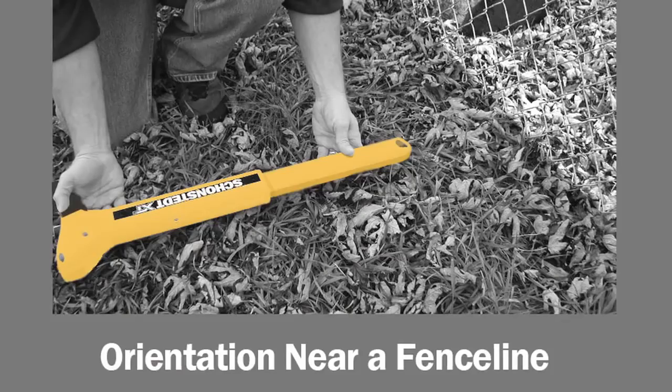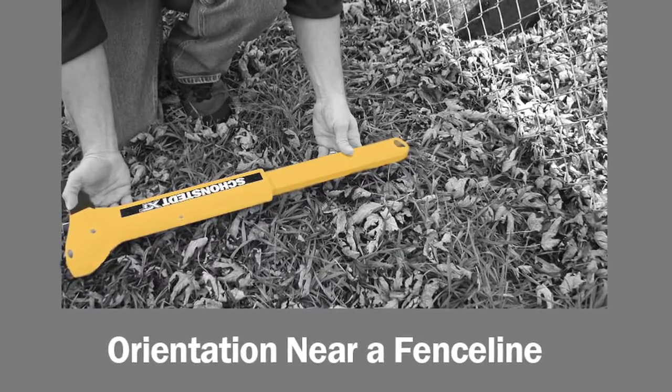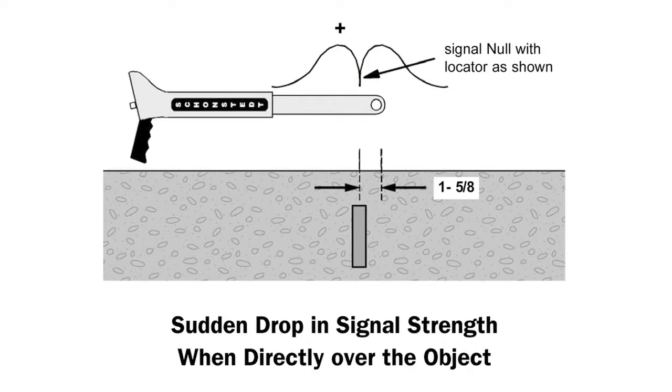Also things to look out for are other above ground ferrous targets such as fence lines, guard rails, and parked cars. Because they contain steel, they'll have a magnetic signature. Using this diagram, this is the technique that you would use to locate a buried facility that's made out of steel and try to avoid the above ground target.